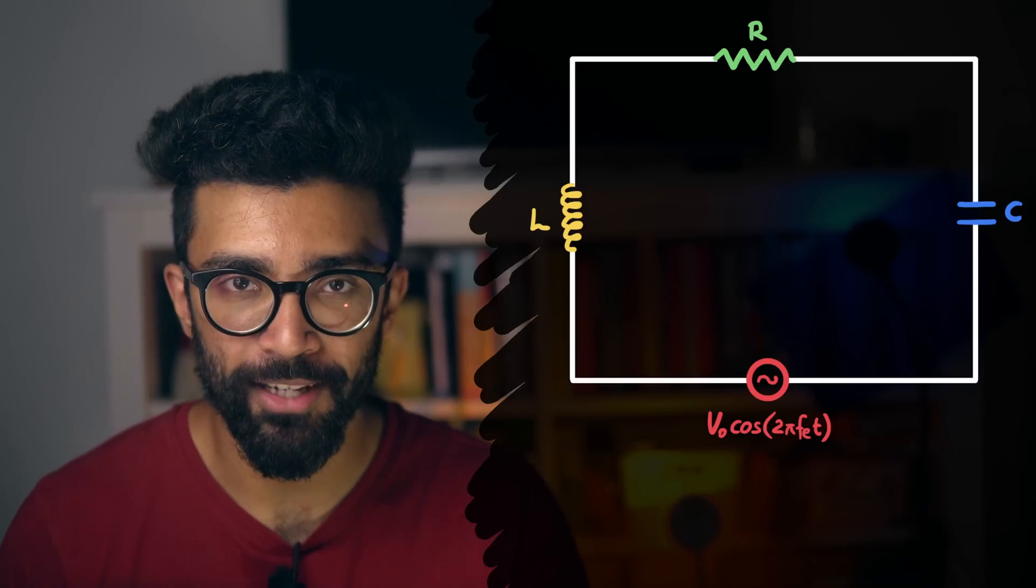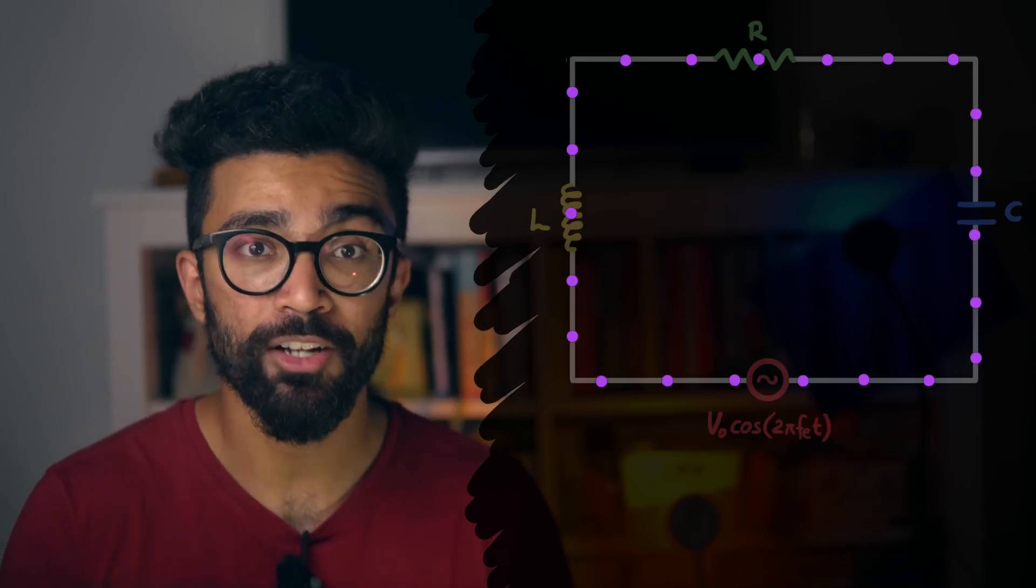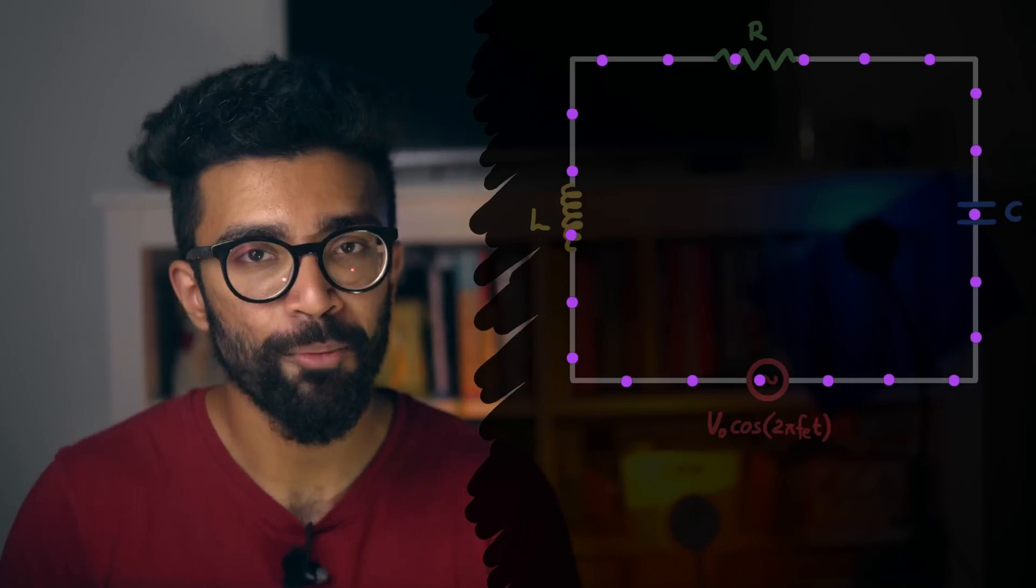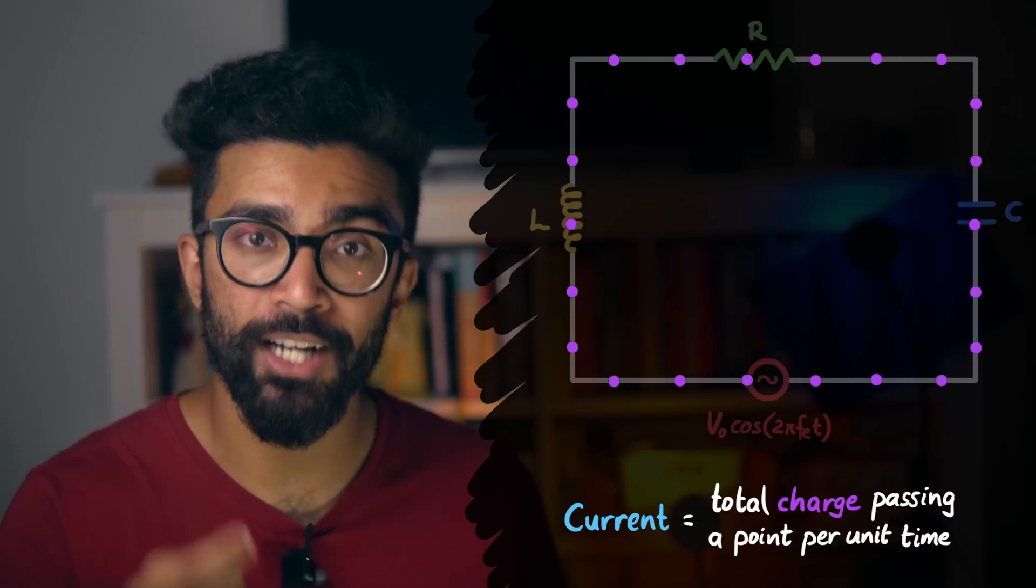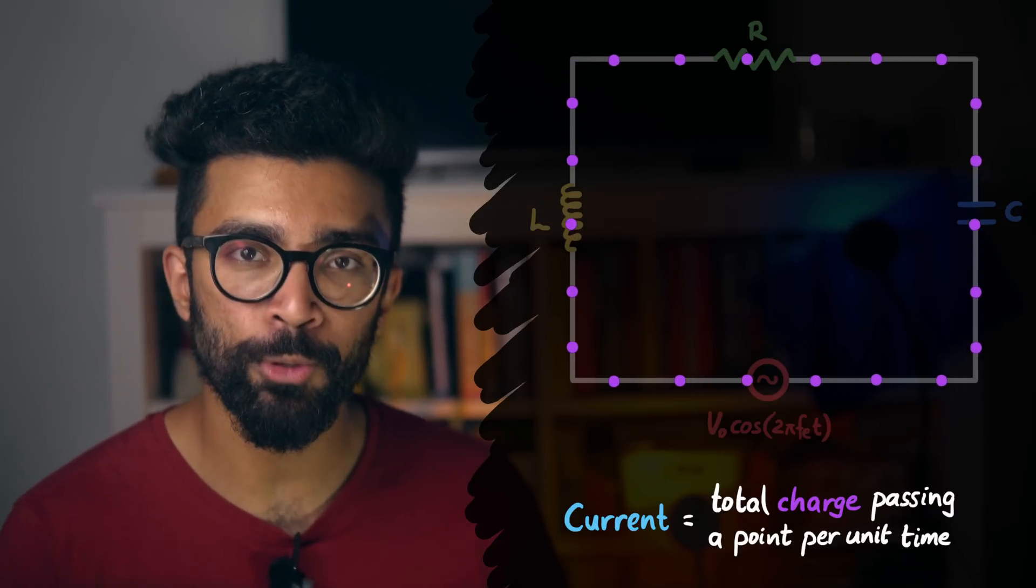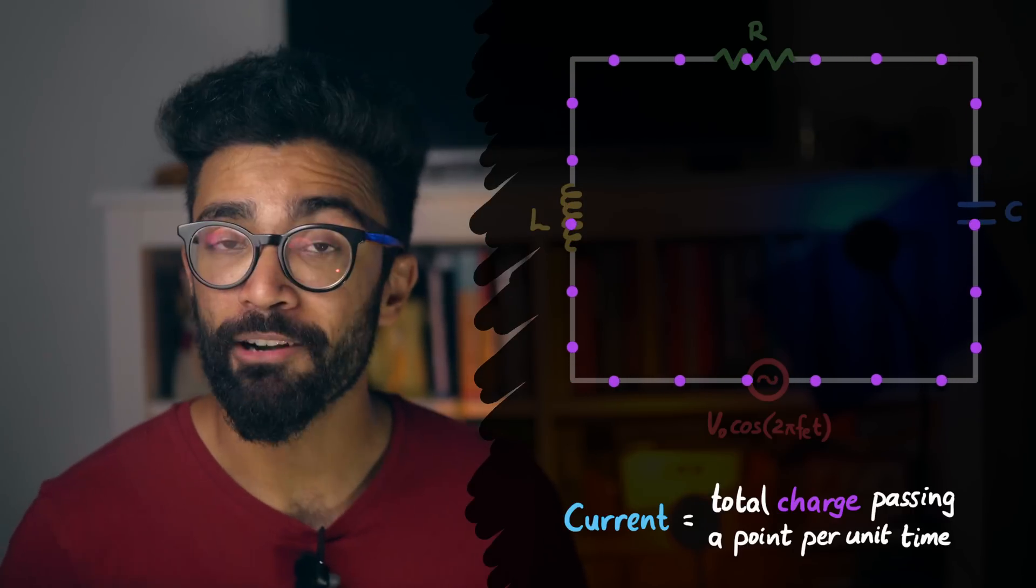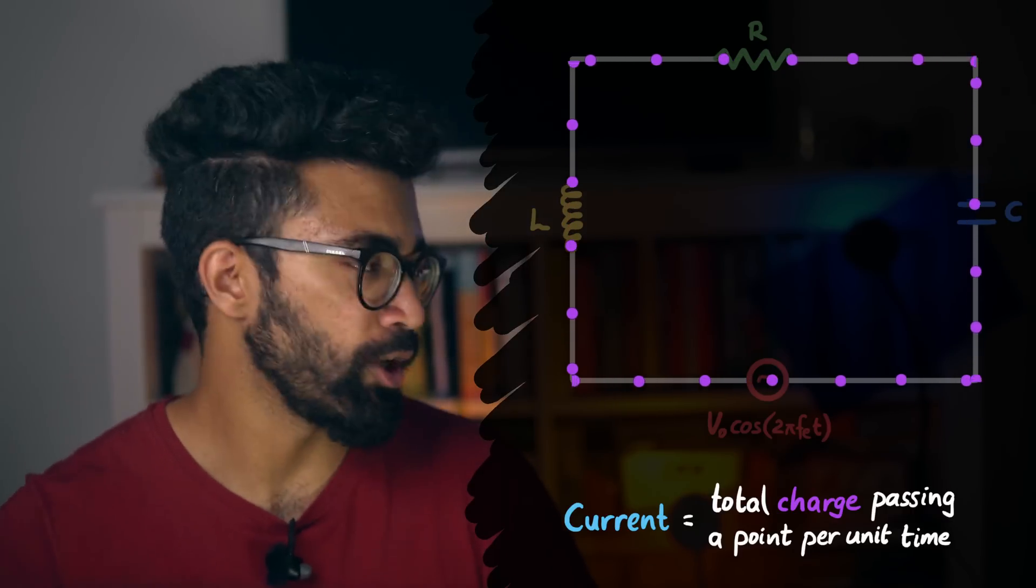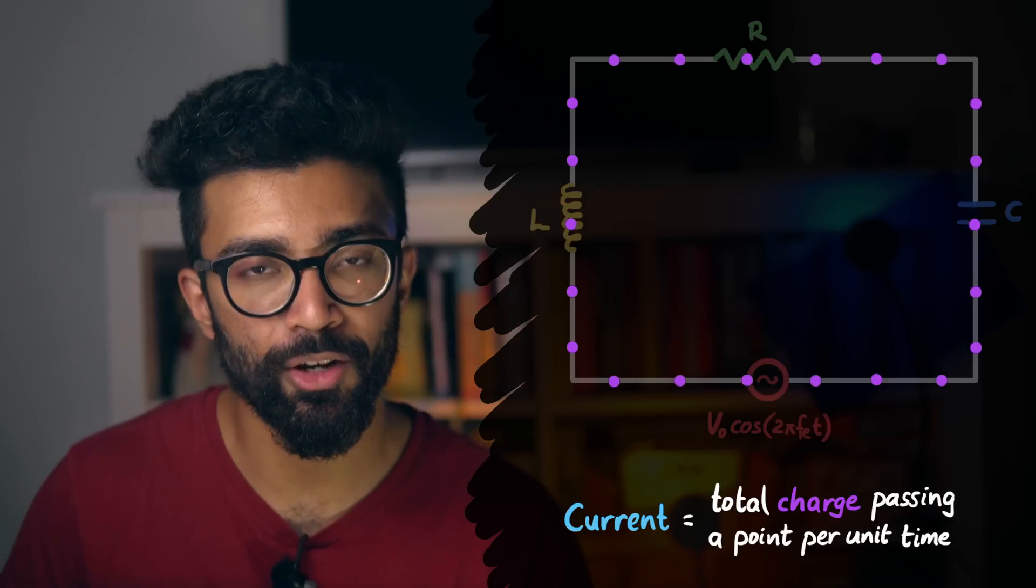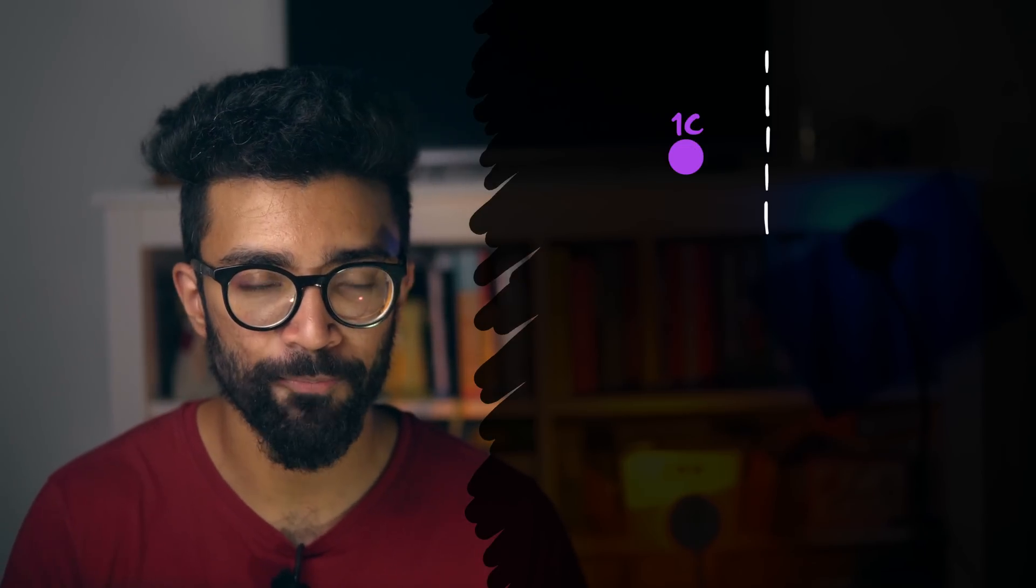To understand what we mean by this, let's first recall that in electric circuits we have charged particles moving, most commonly electrons, and thus we have a current in the circuit. A current is simply the amount of total charge passing a given point per unit time. In very generic terms, imagine we had charged particles that each have a charge of one coulomb, rather than electrons forming the current in our circuit.